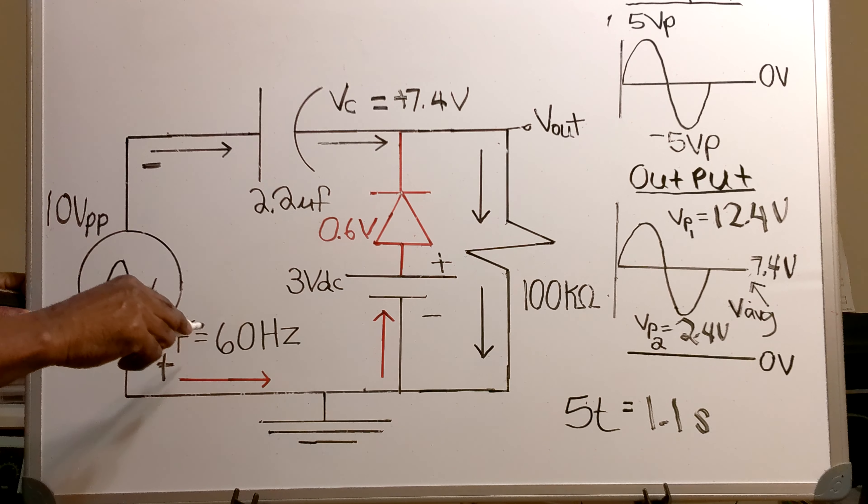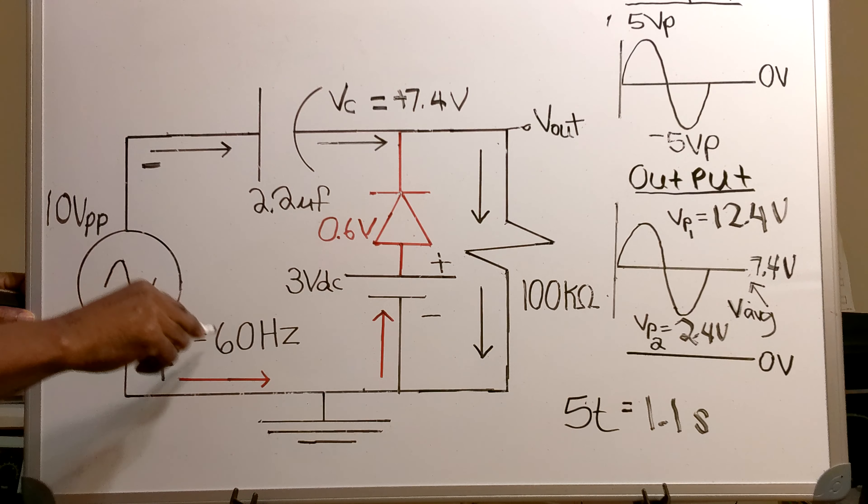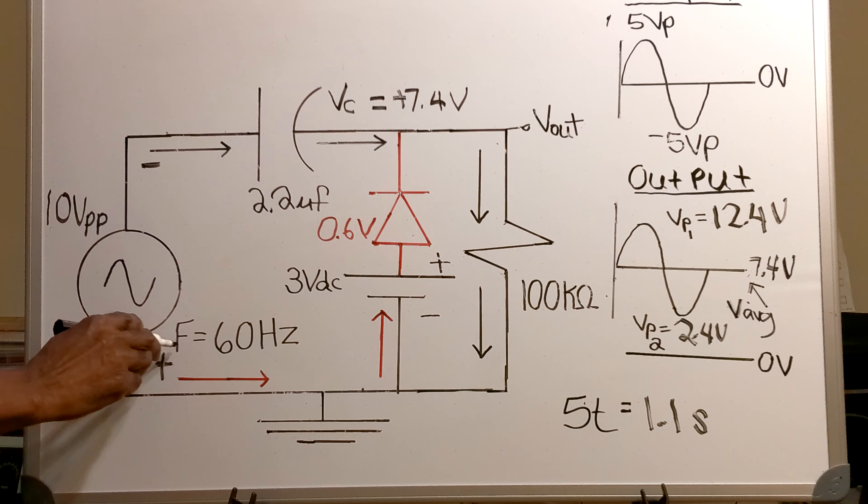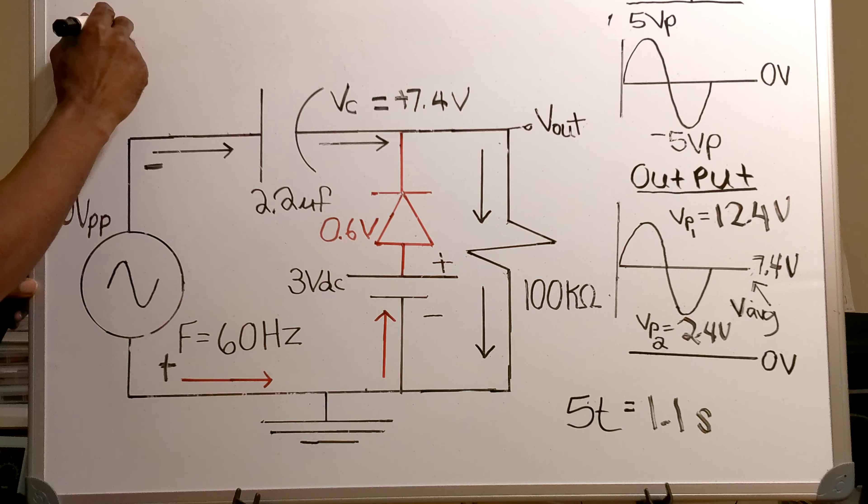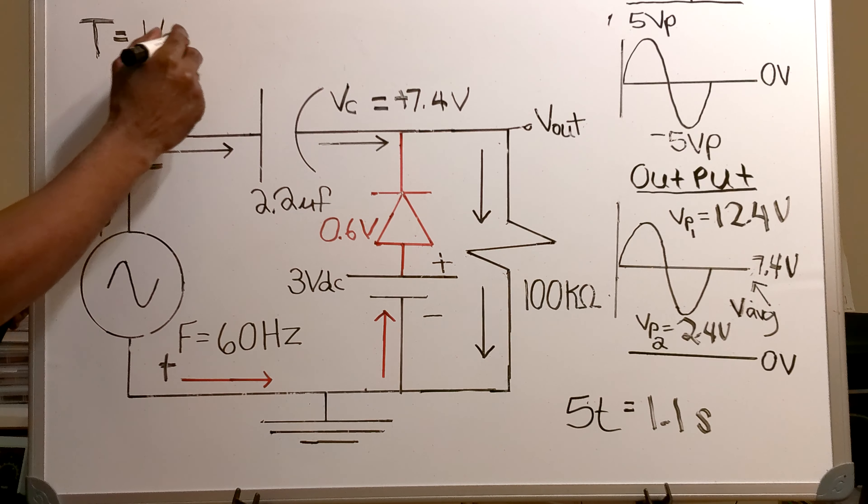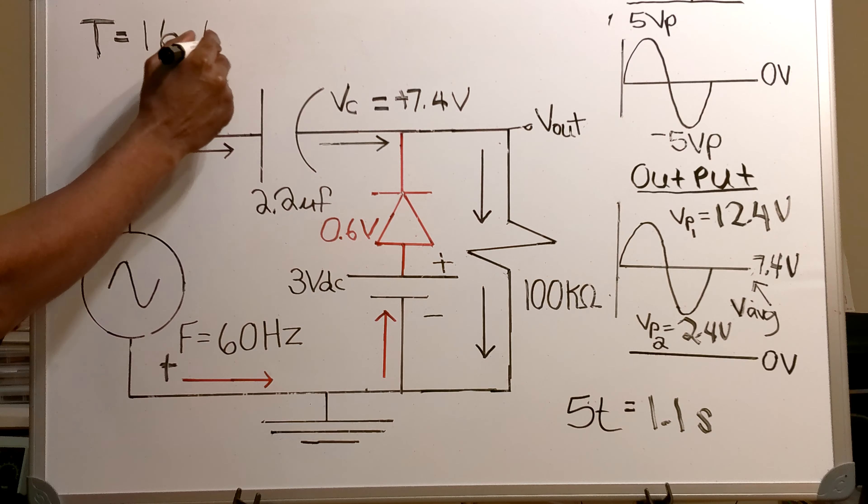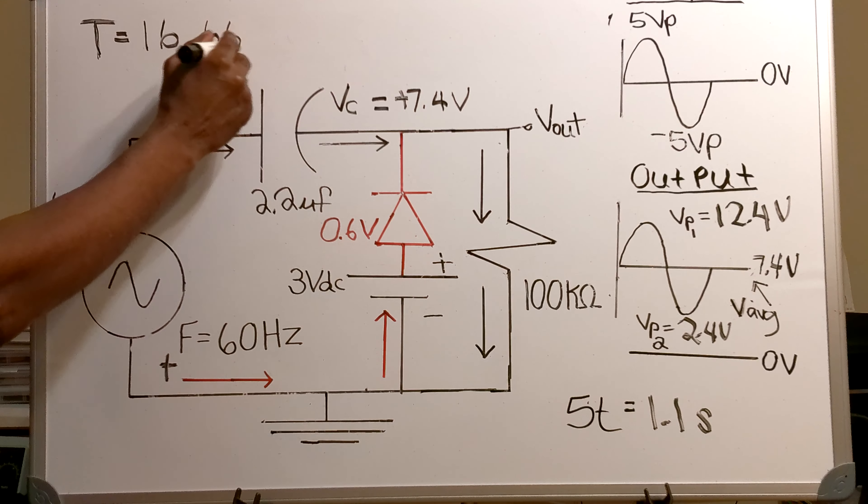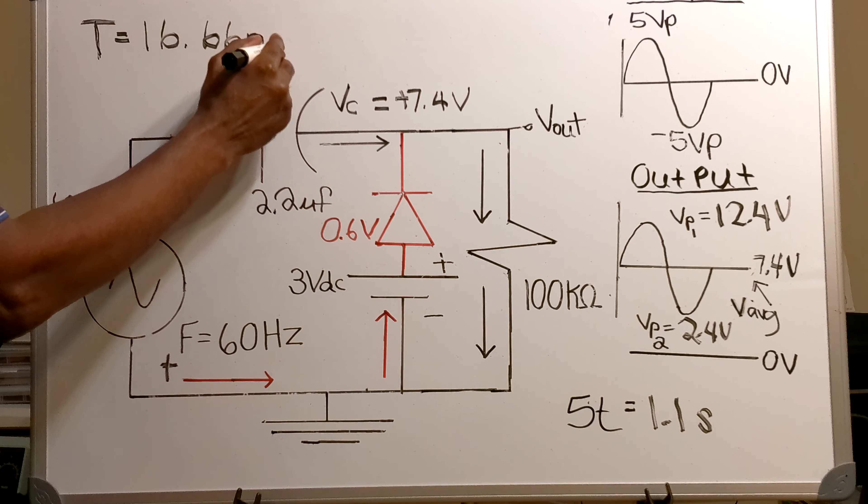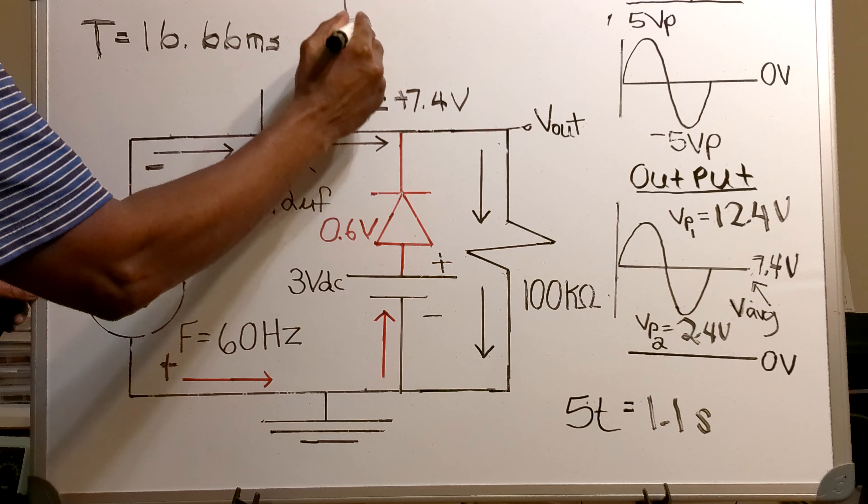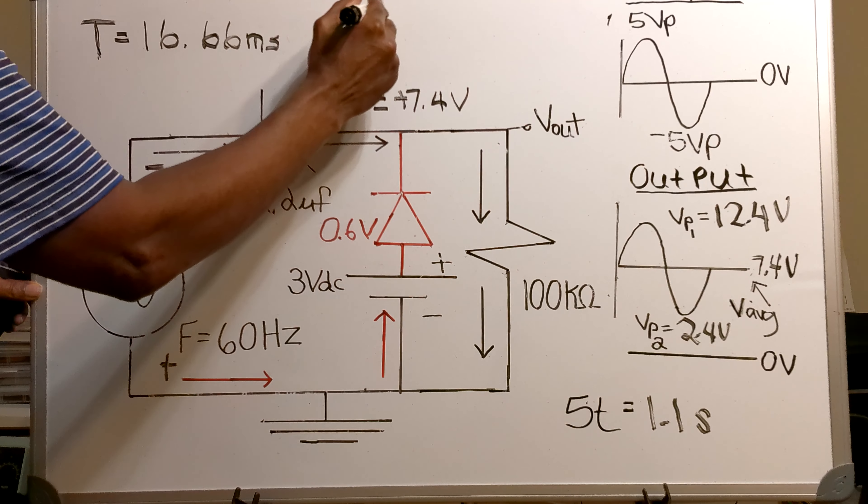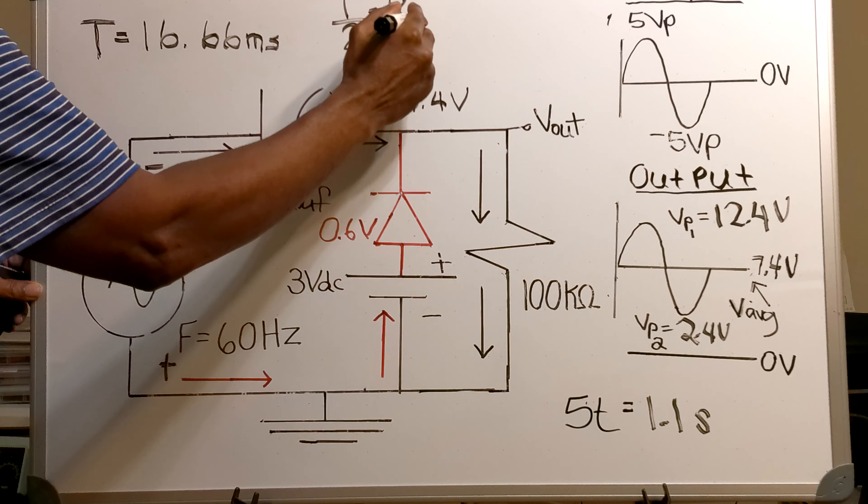Now what I'm going to do is I'm going to compare this 1.1 seconds and I'm going to compare that to the 16.66 milliseconds, which is the period for a 60 hertz signal. So we have here a frequency of 60 hertz, which makes the period 16.66 milliseconds.